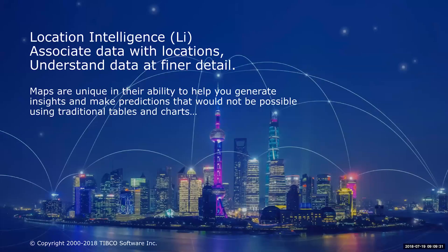Location intelligence, or LI, you may probably have heard this term already. Basically, LI is the idea of taking all your data and adding a geographical context to this data to turn that data into insights. LI is the use of location to help you drive insights.